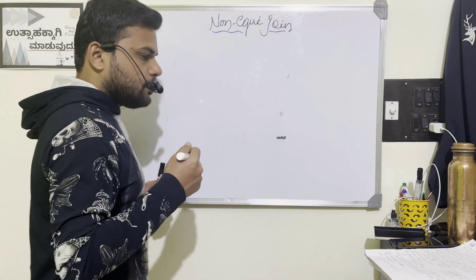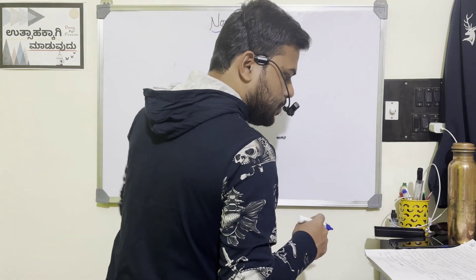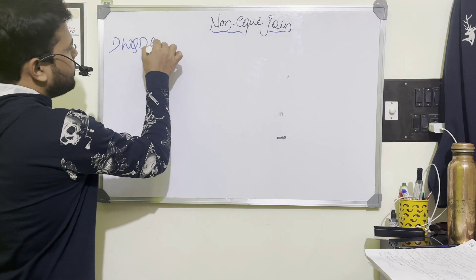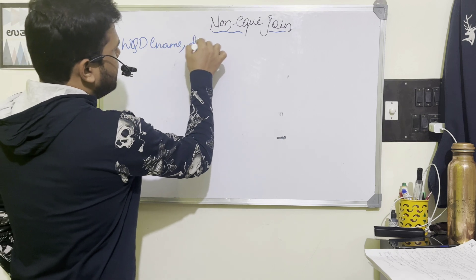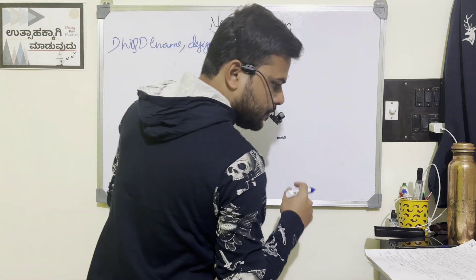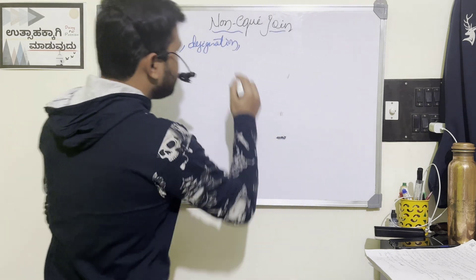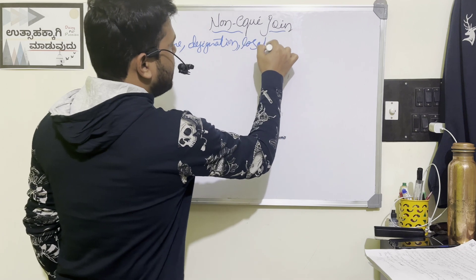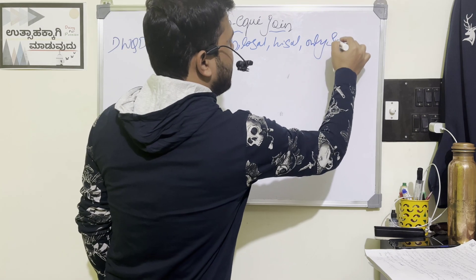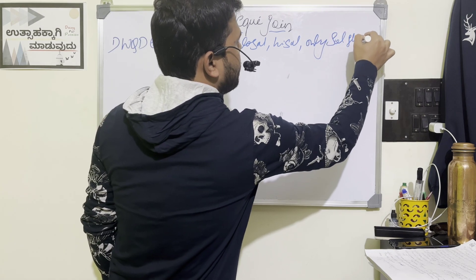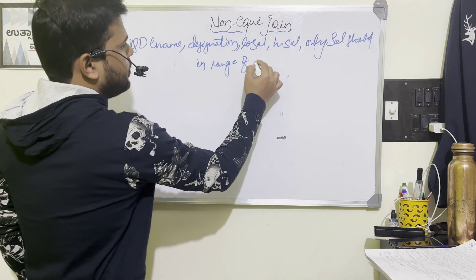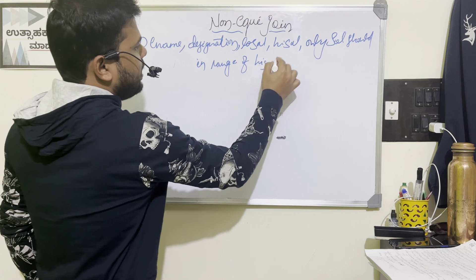First question: write a query to display employee name, designation, low_sal, and high_sal — only where salary should be in the range of high_sal and low_sal.